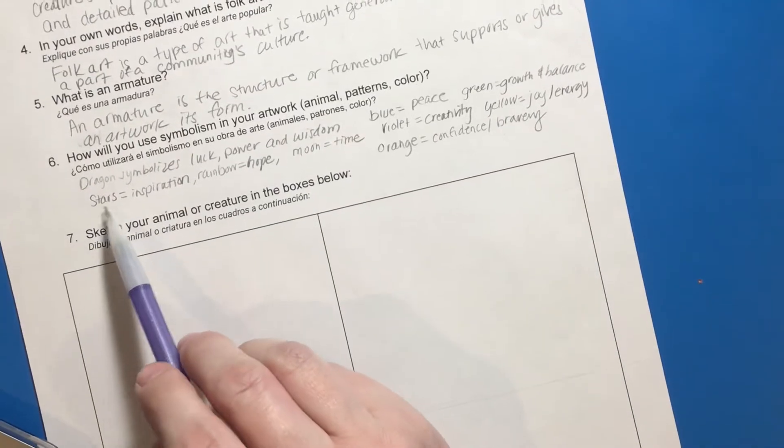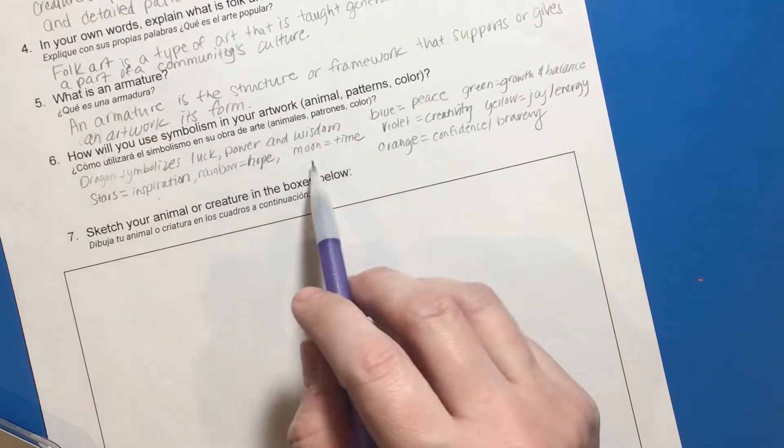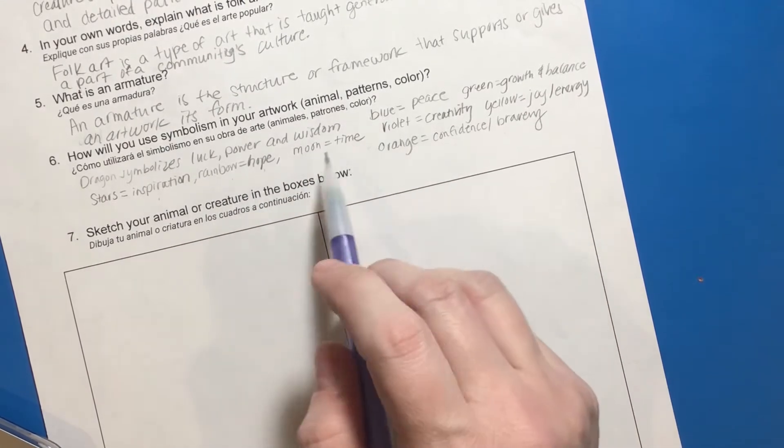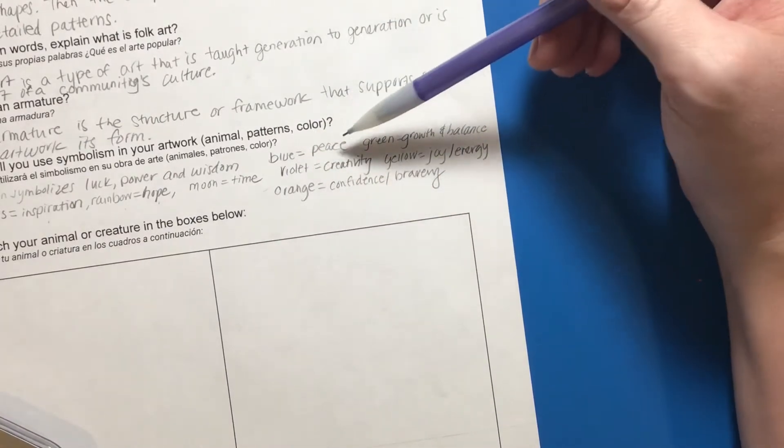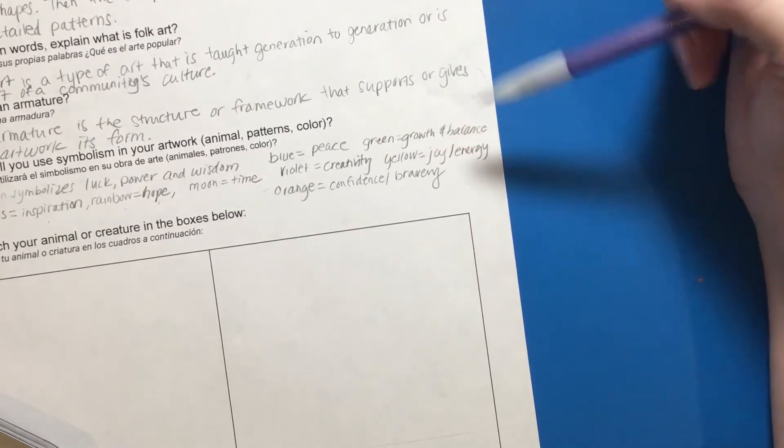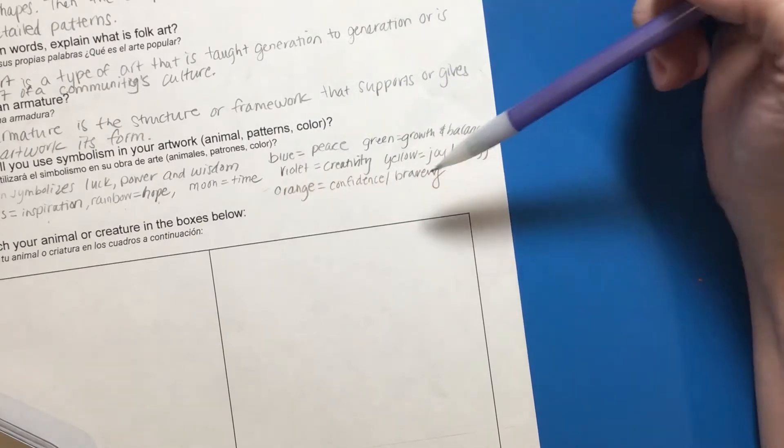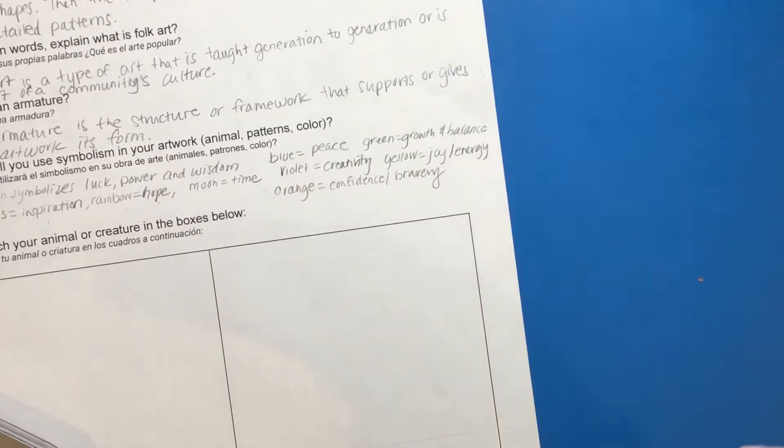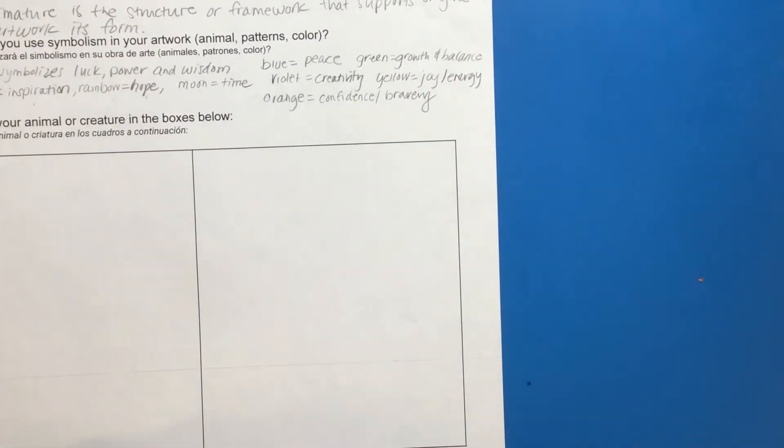And then I thought I could bring in stars for inspiration into my design, or rainbows or moon. The rainbow equals hope, the moon equals time. Then I started to think about colors. Blue is my favorite color and I love that it also symbolizes peace. Green symbolizes growth and balance. Violet is creativity. Yellow is joy or energy, and orange is confidence or bravery. And these are all things that I would like in myself, so I'm going to use those symbolism into these colors and symbols to help bring that into my alabrije.